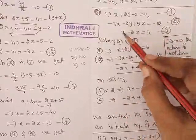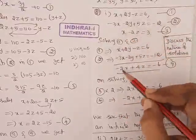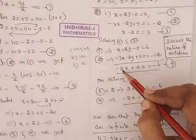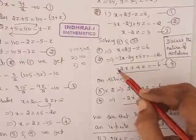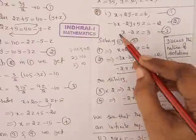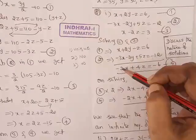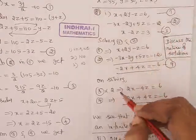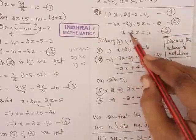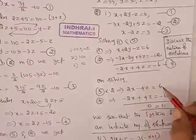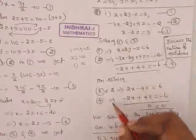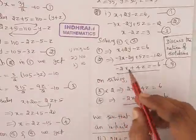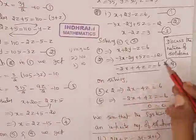So here coefficient is 1, here coefficient is 2. I am talking about numerical value without sign. So here also I need 2, then only these two coefficients will become equal. So multiplying equation number 3 by 2, which implies 2x minus 4z equal to 6. Equation number 4 implies, as it is: minus 2x plus 4z equal to minus 6.